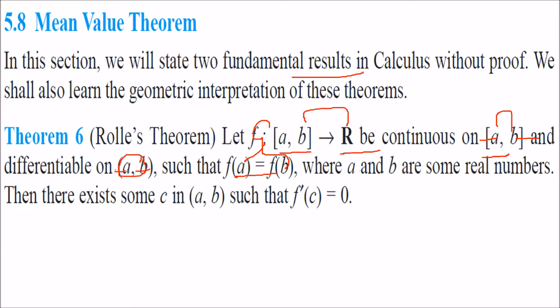Where a and b are some real numbers, then there has to exist some c in (a, b). Means you have a and b, there has to be some c in between this a, b such that the differential of the function when you keep c, it will be 0.